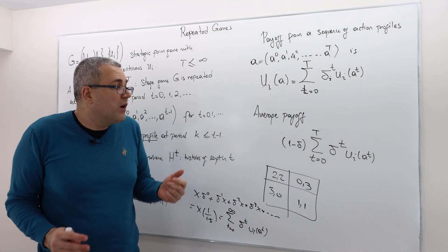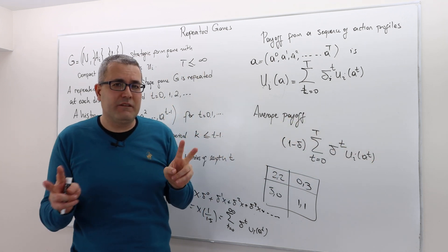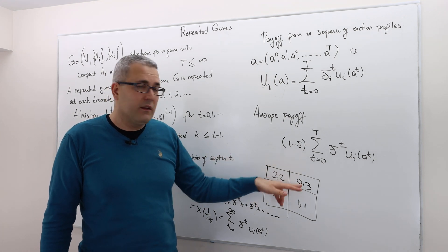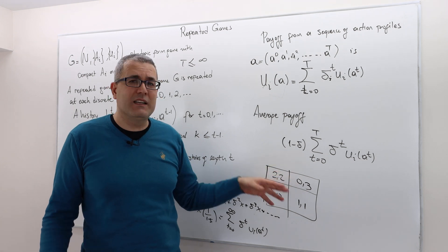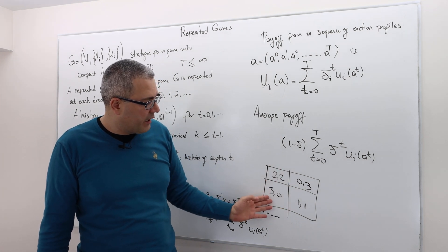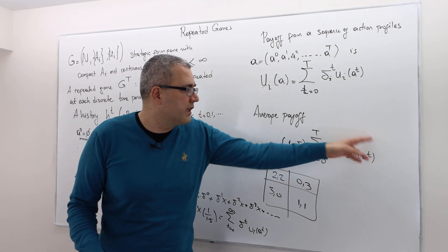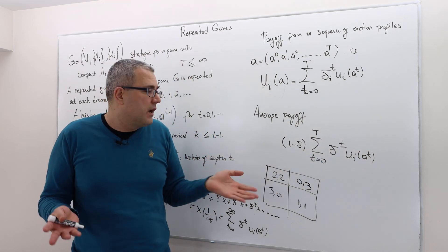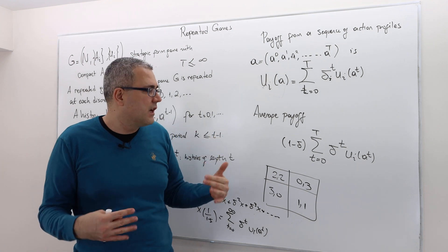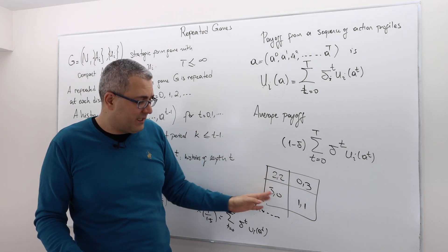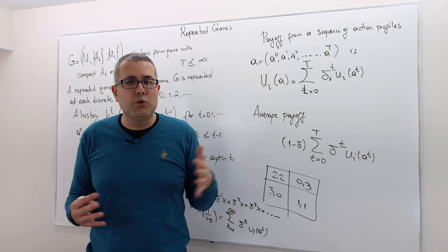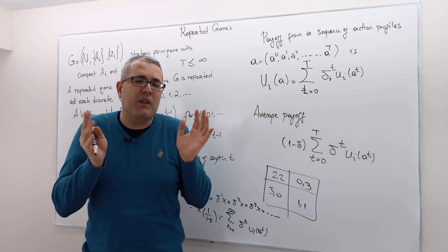Why do we care about average payoff? If we calculate the average payoff, it gives us the opportunity to relate the repeated game payoff with the same units as the stage game payoff. For example, in the prisoner's dilemma with payoffs (2,2), (0,3), (3,0), (1,1), players can get at most three. So the average payoff cannot be four, since in no period can a player achieve a payoff of four or more. The average payoff gives us a tool to compare the repeated game payoff directly with stage game payoffs.